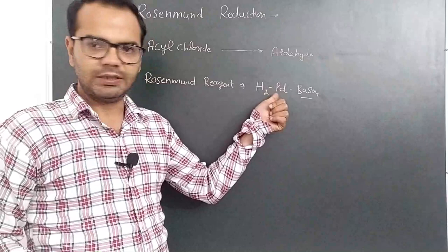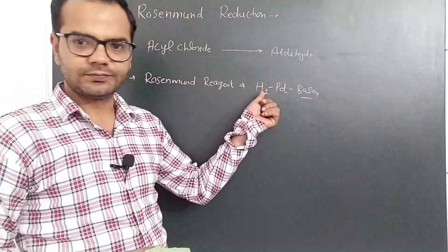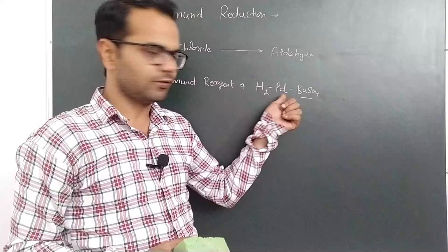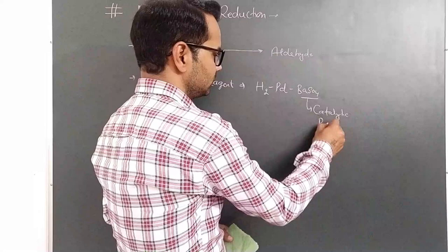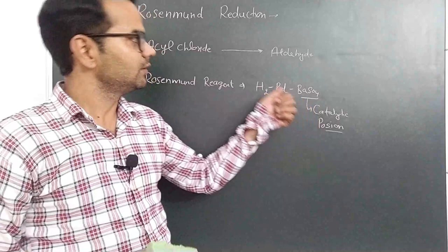Barium sulfate acts as a catalytic poison — it controls the reductional capacity of hydrogen with palladium metal. Without barium sulfate, hydrogen would act as a strong reducing agent. Barium sulfate controls the reductional activity of hydrogen, so it acts as a catalytic poison.